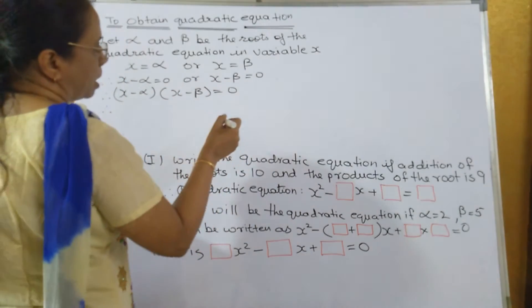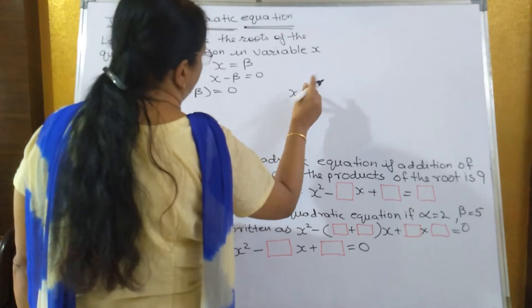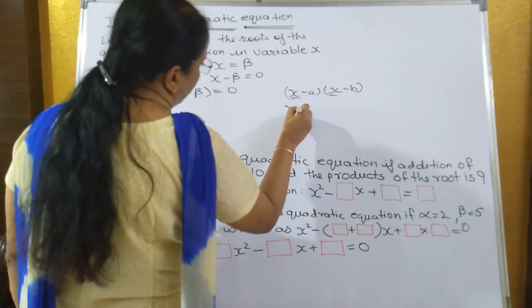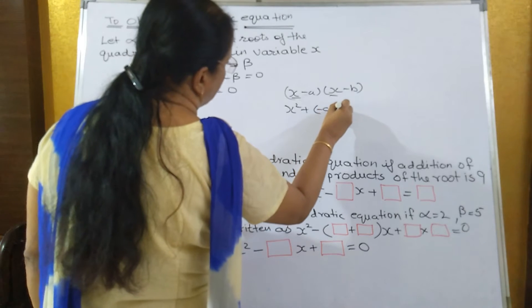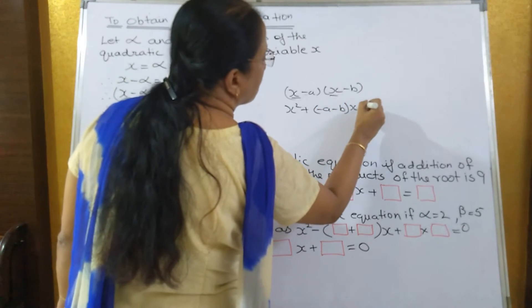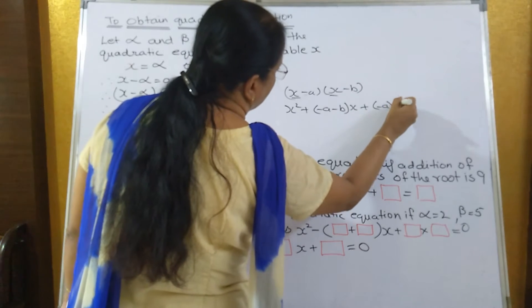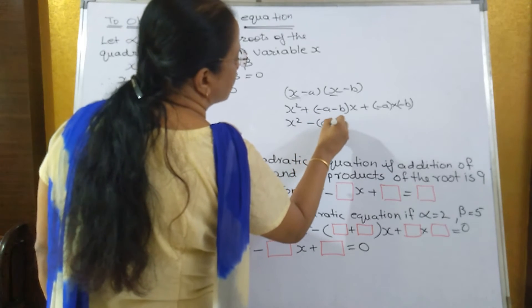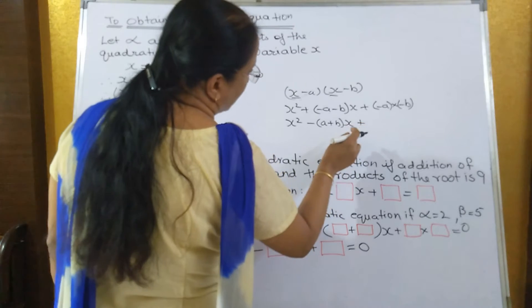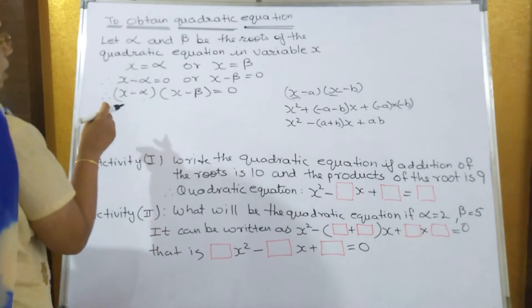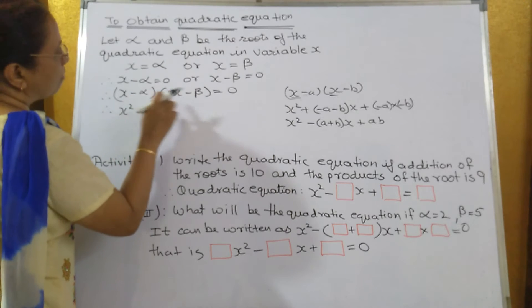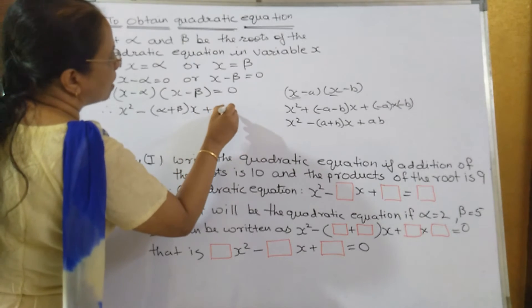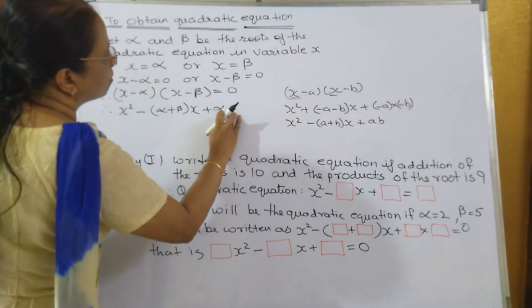As studied in a younger standard, for x minus a into x minus b, we write x squared, then minus a minus b into x, plus minus a into minus b. So x squared minus (a plus b) into x, plus ab. Similarly here, we write x squared minus (alpha plus beta) into x, plus alpha into beta.